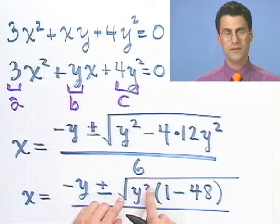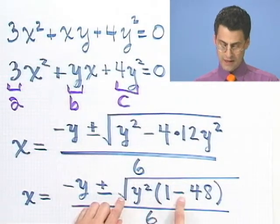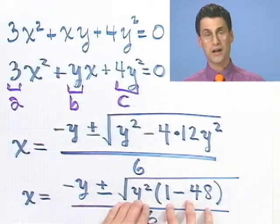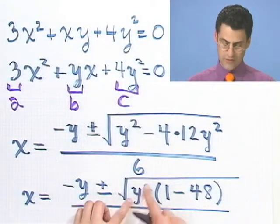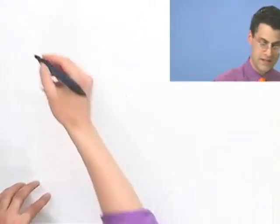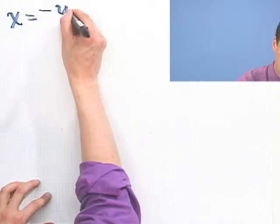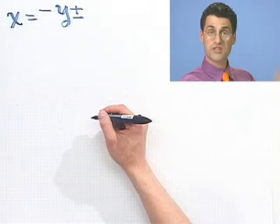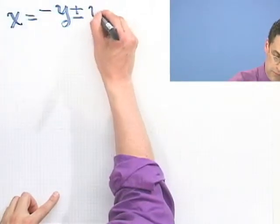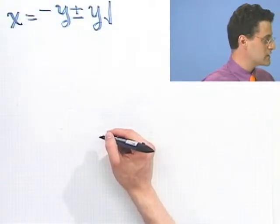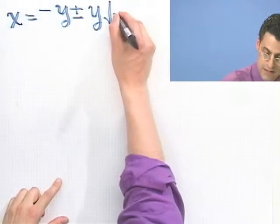The square root of y² is just y. Using laws of radicals, the square root of a product is the product of the square roots. So x equals negative y, plus or minus y times the square root of (1 minus 48), which is the square root of negative 47 — imaginary — all over 6.